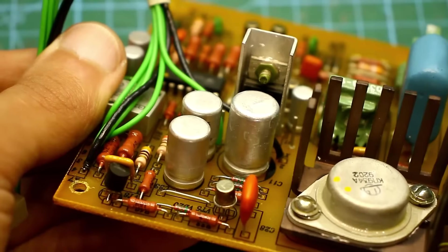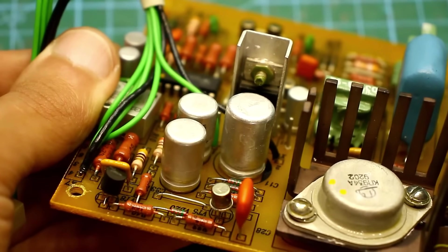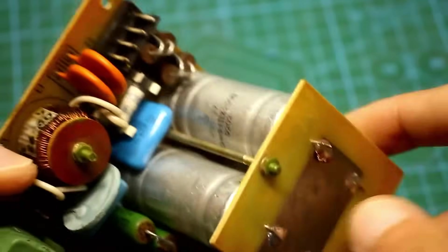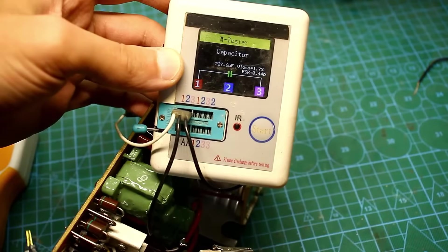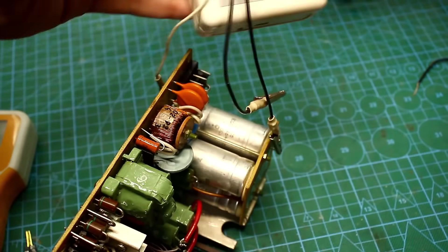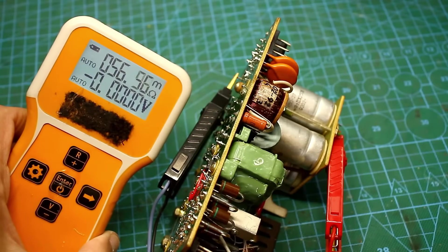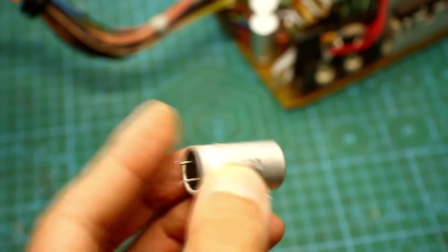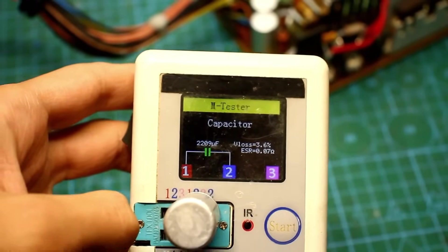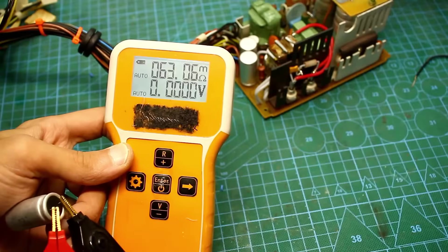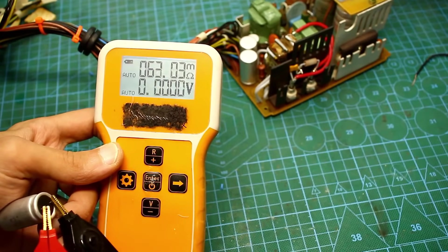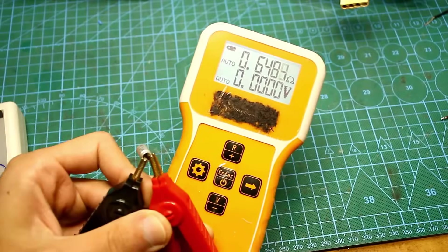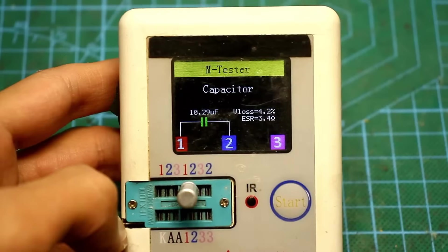I think many will be interested in the condition of the capacitors. We desolder a few and check their characteristics. A large electrolytic capacitor, 200 volts, 220 microfarads. Capacitance, 227 microfarads. Leakage, 1.7% internal resistance is 56 to 57 milliohms. Electrolytic capacitor, 16 volts, 2200 microfarads. Actual capacitance is 2200. Leakage is 3.6%. Internal resistance is 63 milliohms. Perfect. Things are also going well with the small electrolytic capacitors. Slightly elevated internal resistance is completely normal for such a small capacitance.